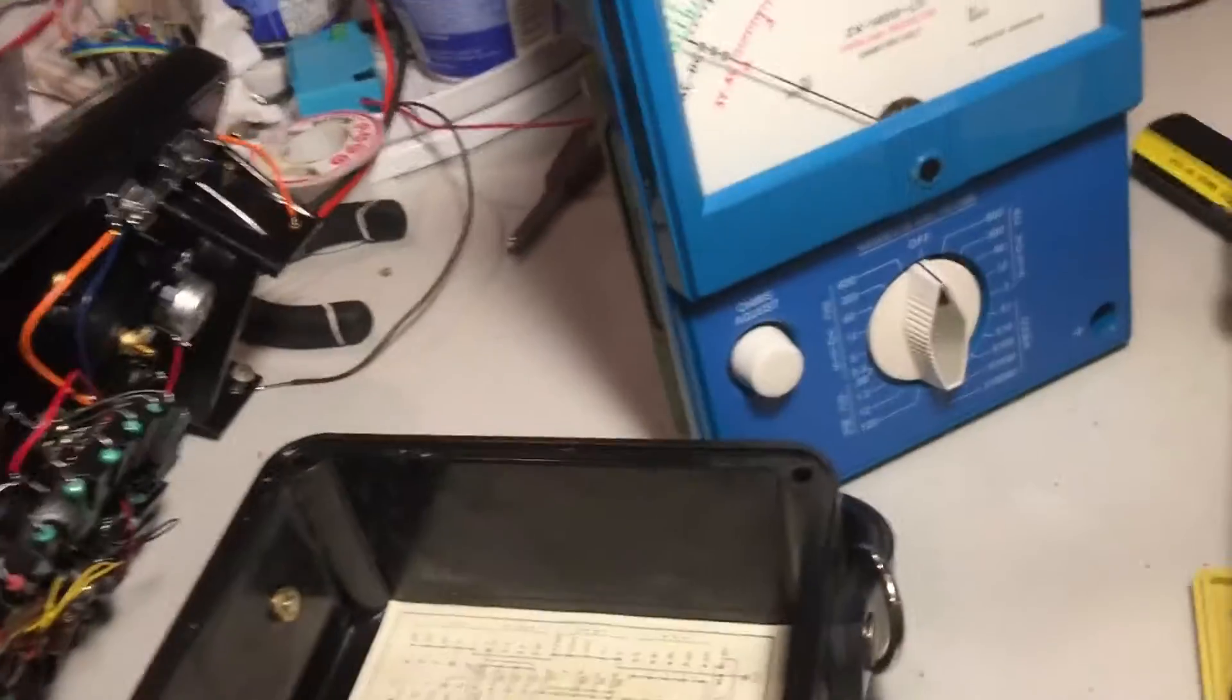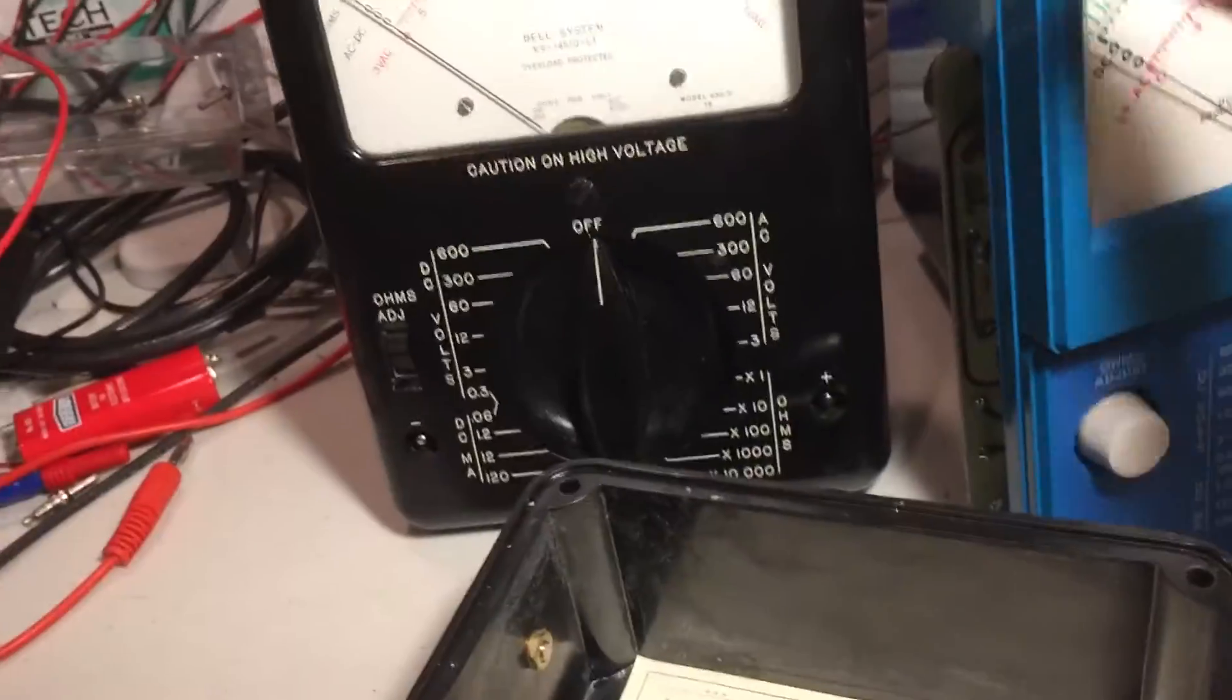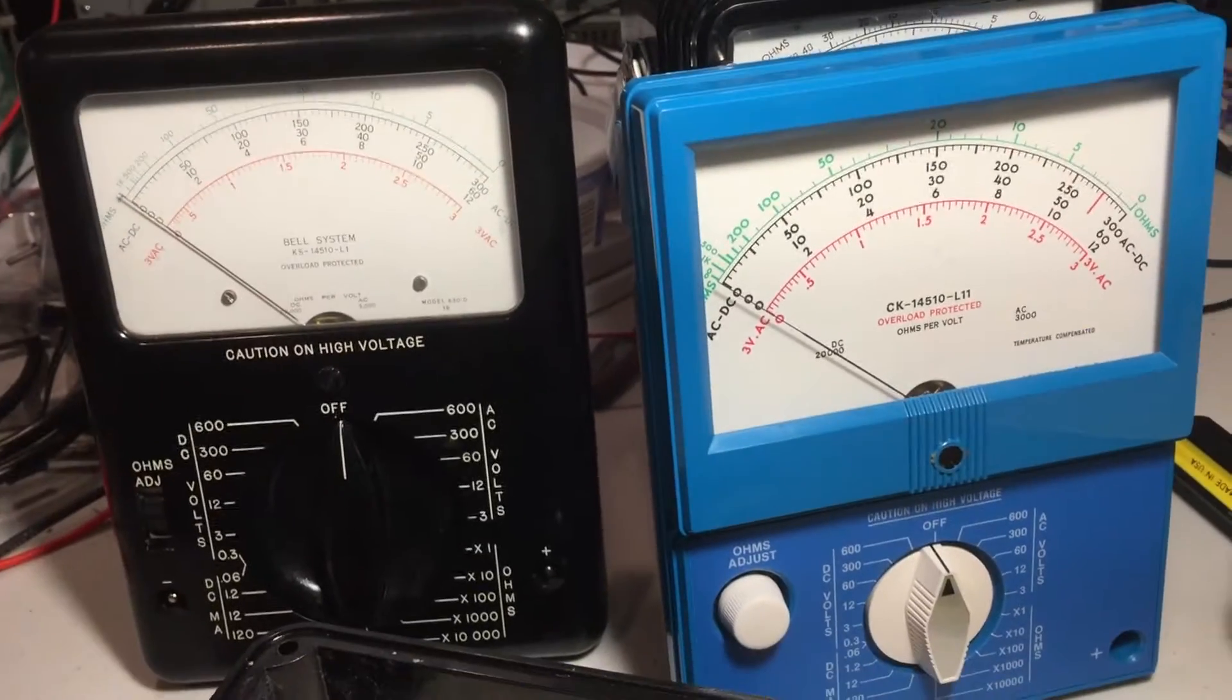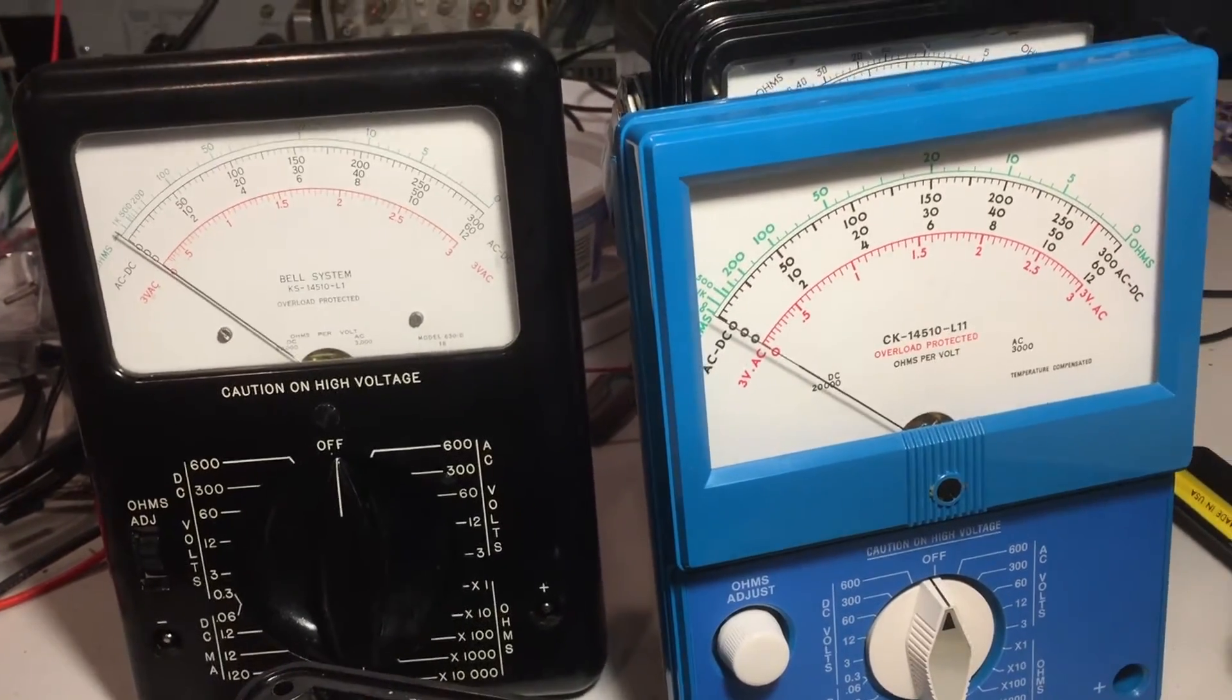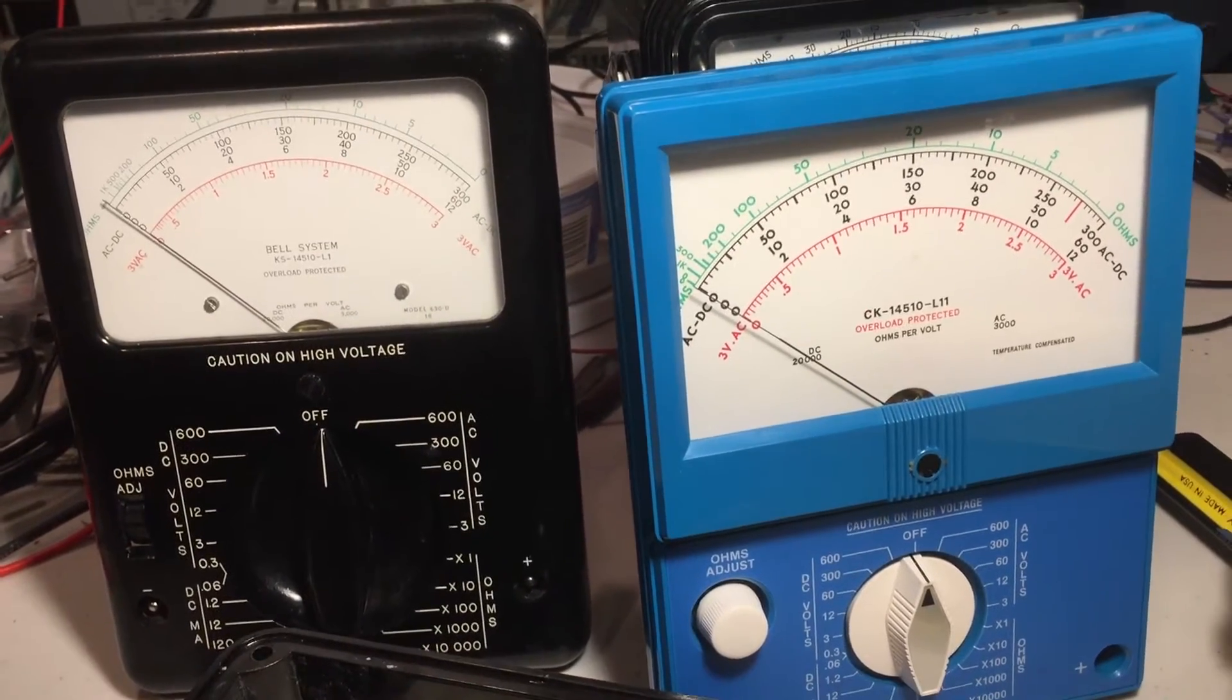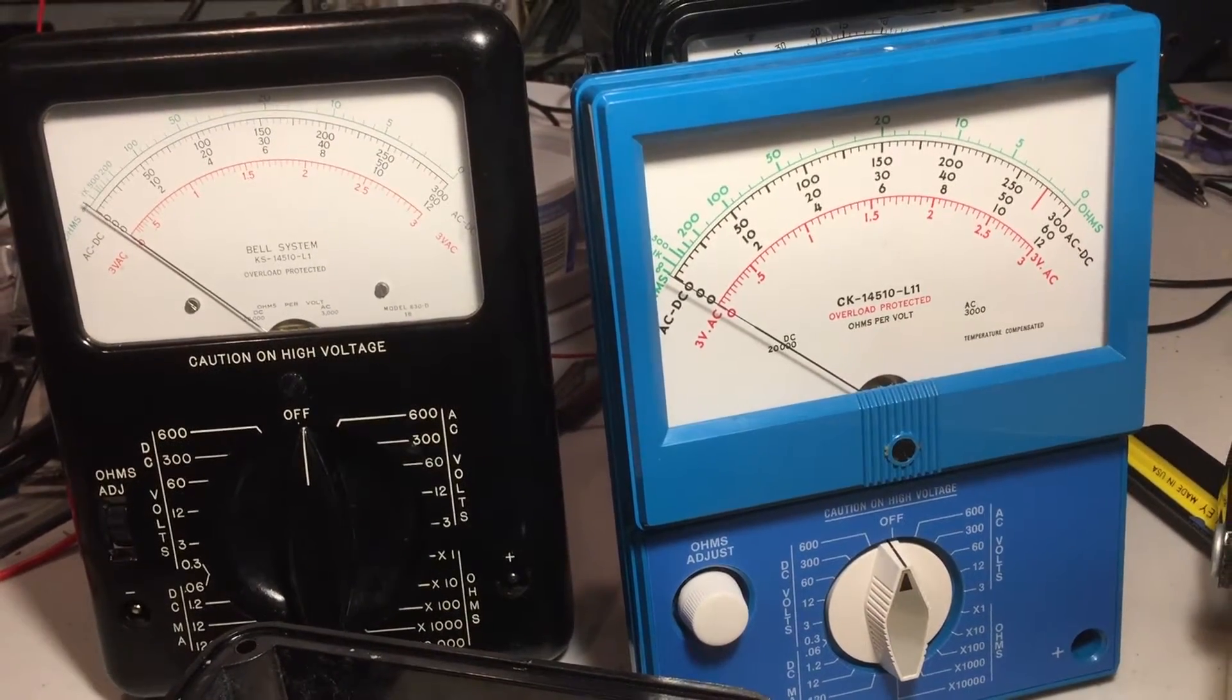All right well thanks for watching. I hope you enjoyed these two classic volt ohm meters. They can be had on eBay. Oh by the way this you know the 260 based one tends to be much more reasonably priced than a regular 260. Granted it doesn't have a couple of the features like the negative polarity switch which is nice to have on an analog meter. But otherwise you know it's a Simpson 260 pretty much. It's a good solid meter.